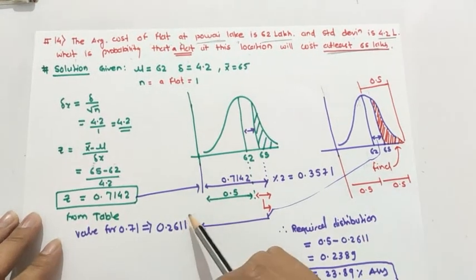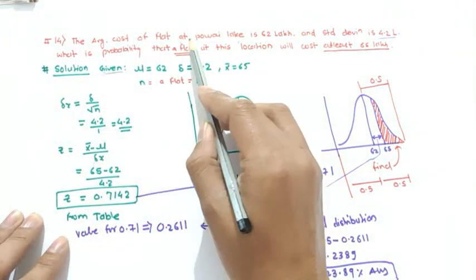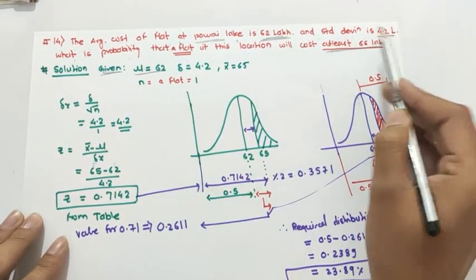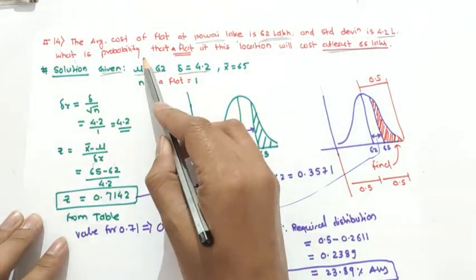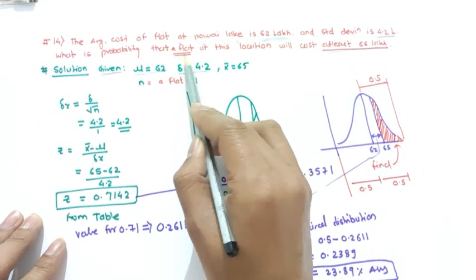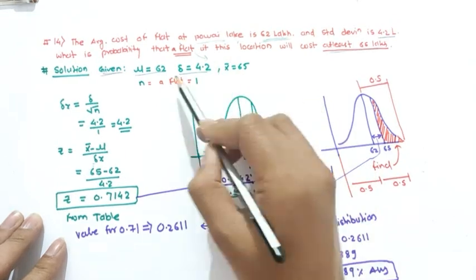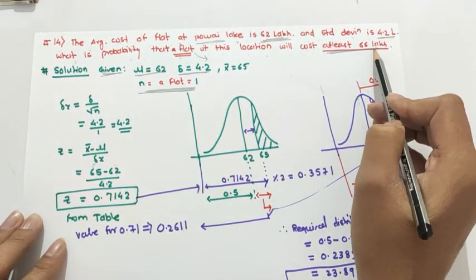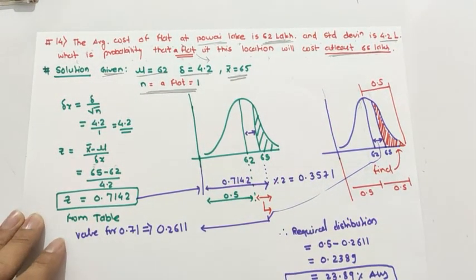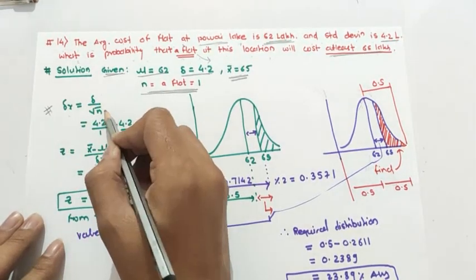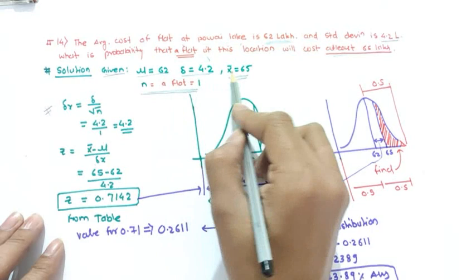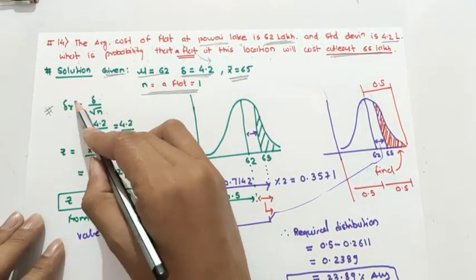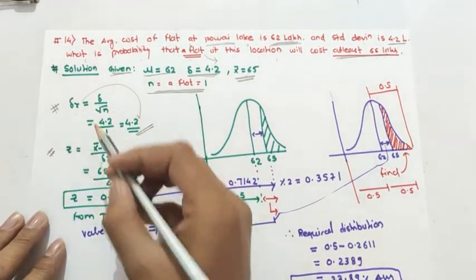Given data: mean mu is 62 lakh, standard deviation delta is 4.2 lakh. Since they mention a single flat, n equals 1. x-bar is 65 lakh. First step: sigma-x equals sigma upon square root of n, so 4.2 divided by square root of 1 equals 4.2. So delta-x is 4.2.